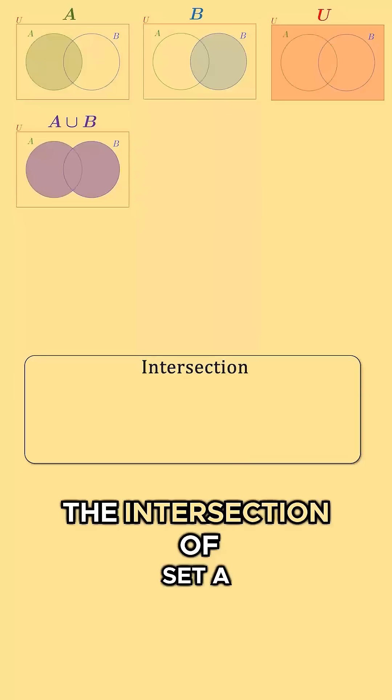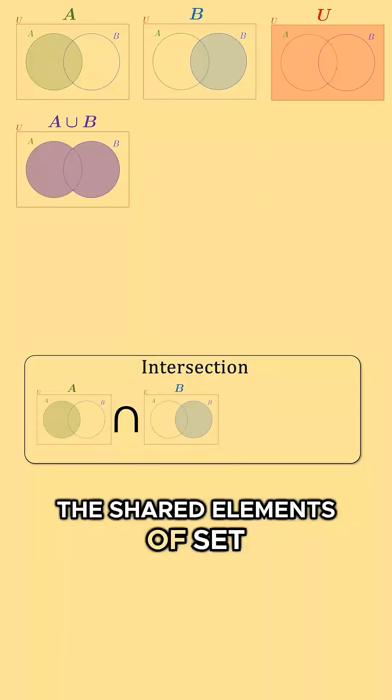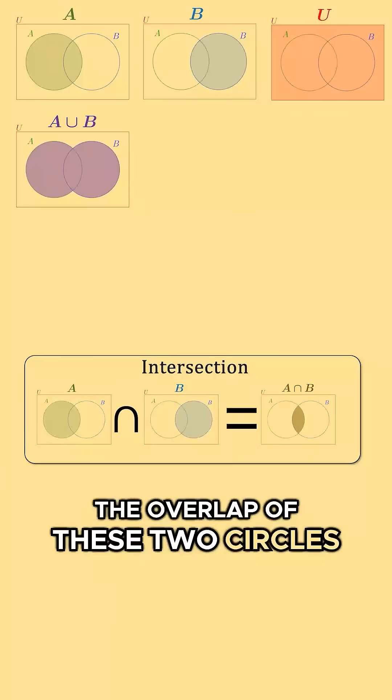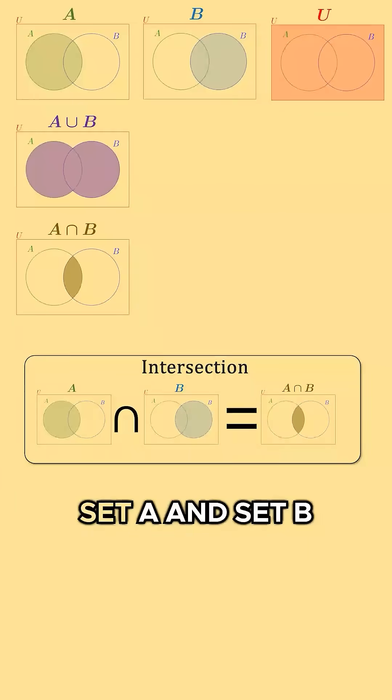The intersection of set A and set B would contain the shared elements of set A and set B. In the diagram, the overlap of these two circles would represent the intersection of set A and set B.